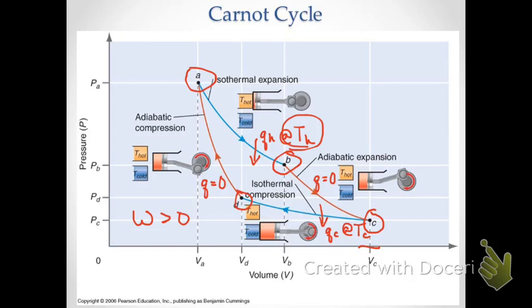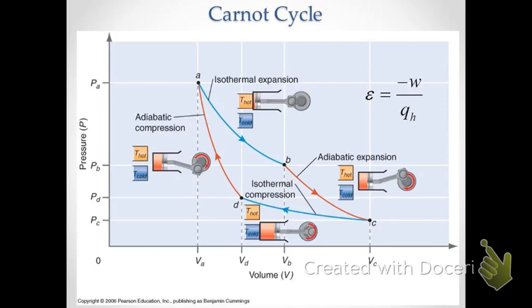It's a cyclic process that gets back to step one, which is critical for an engine because we need to keep doing this over and over again for continuous motion. We're interested in the efficiency associated with this cyclic process. Since each step is reversible, this is the maximum amount of work we can get out of the system.